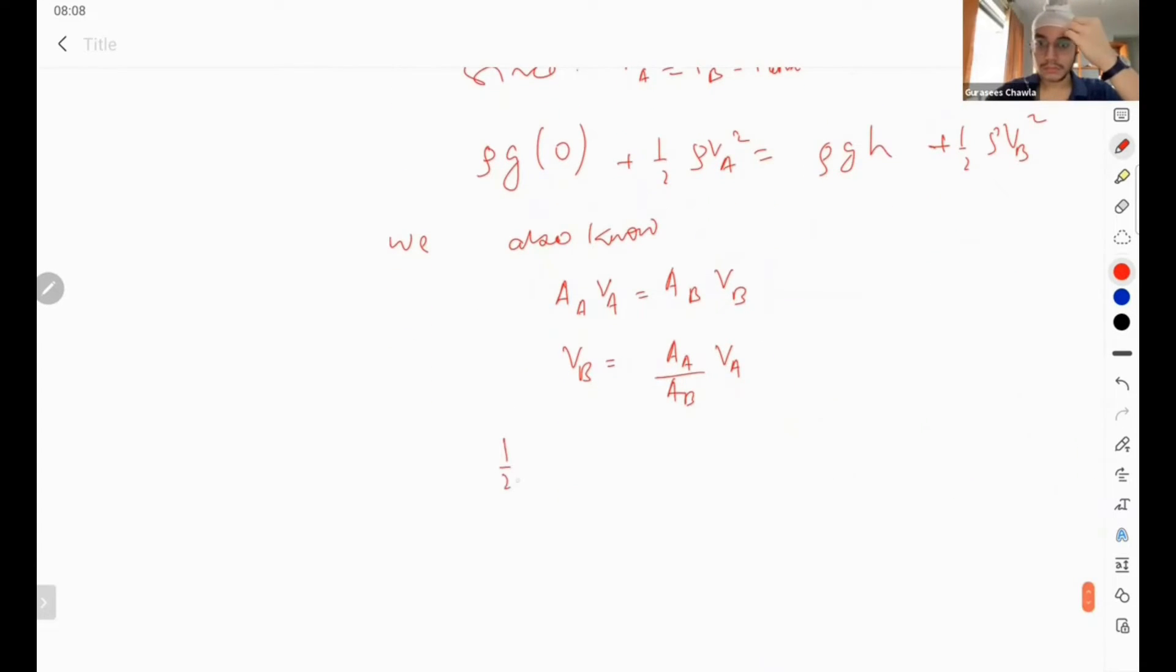So I can write this expression as ½ρv_a² - ½ρ, in place of v_b I can write (A_a/A_b × v_a)², is equal to ρgh. So rho gets cancelled out.